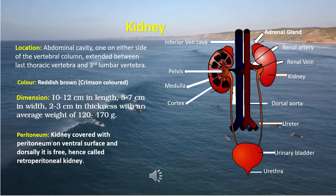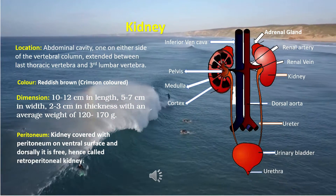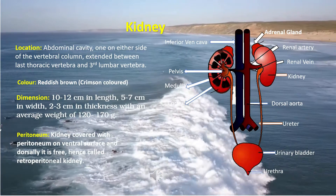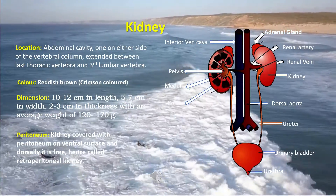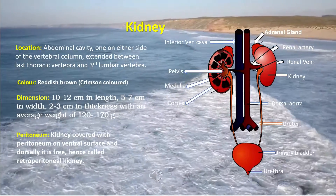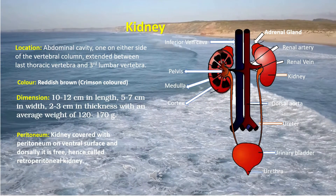Kidneys are located in the abdominal cavity, one on either side of the vertebral column, extending between the last thoracic vertebra and the third lumbar vertebra. They are reddish-brown or crimson colored organs, about 10 to 12 centimeters in length, 5 to 7 centimeters in width, and 2 to 3 centimeters in thickness, with an average weight of 120 to 170 grams.